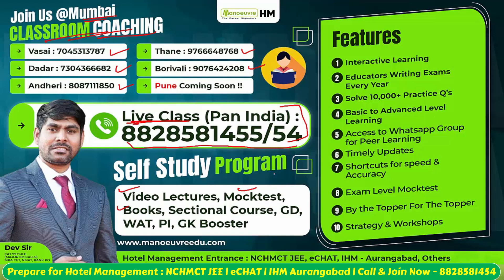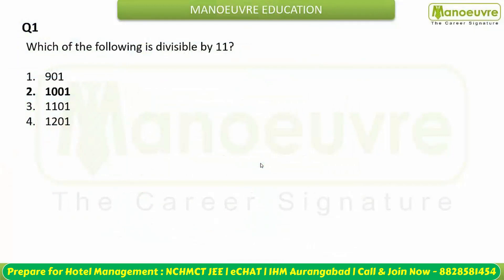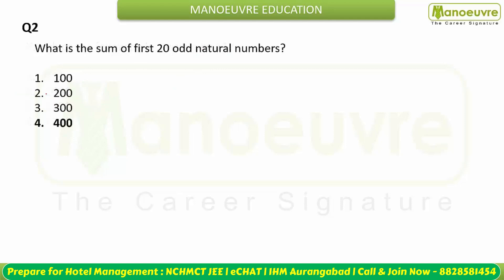Let's start with our first question: which of the following is divisible by 11? You can check directly. 901 is not divisible; 1001 is divisible by 11. The rest of the options are not divisible by 11, so option number two is your answer.